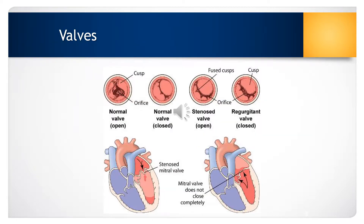A normal functioning valve will open and close completely. If there is a stenotic valve, it is unable to open sufficiently during left atrial systole, inhibiting left ventricular filling. If there is regurgitation, such as in the mitral valve, the valve does not close completely during left ventricular systole, permitting blood to re-enter the left atrium.